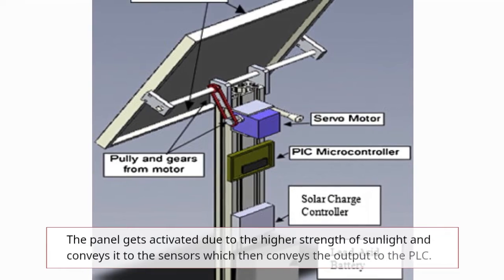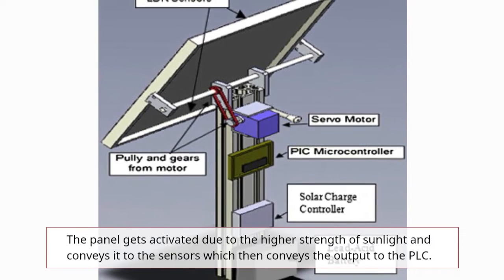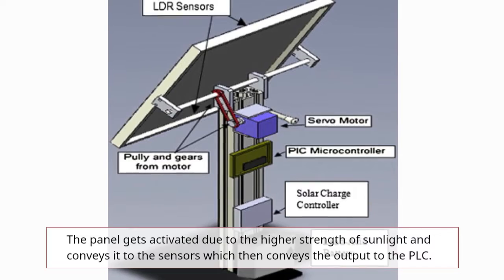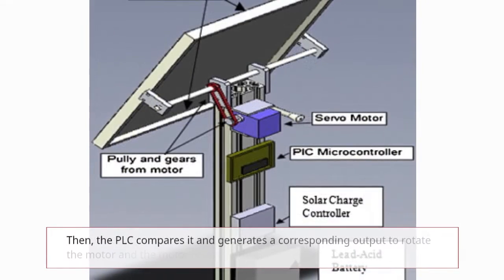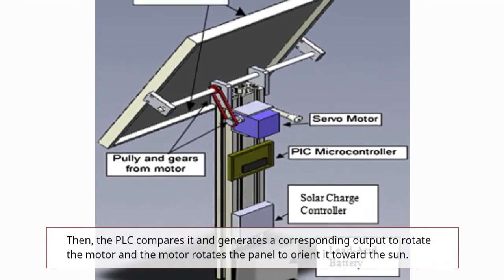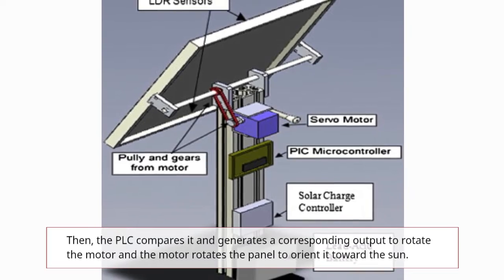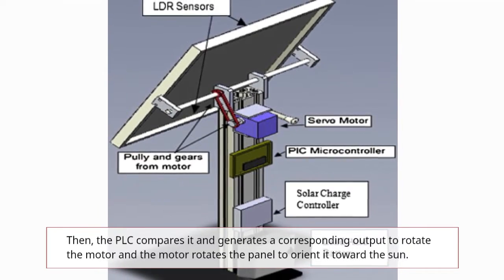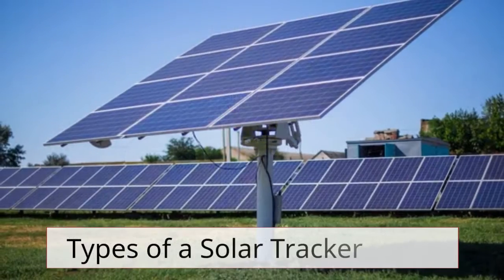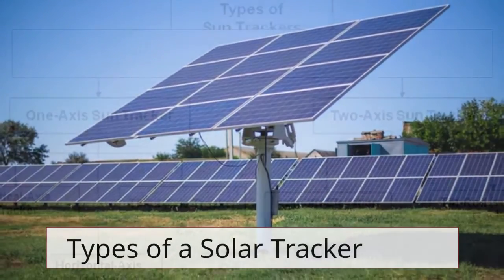The panel gets activated due to the highest strength of sunlight and conveys it to the sensors, which then conveys the output to the PLC. Then the PLC compares it and generates a corresponding output to rotate the motor and the motor rotates the panel to orient it towards the sun.